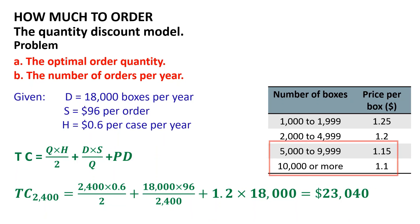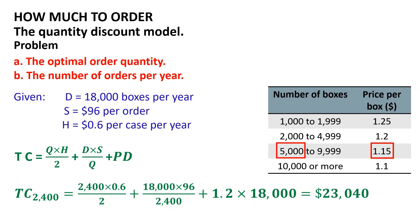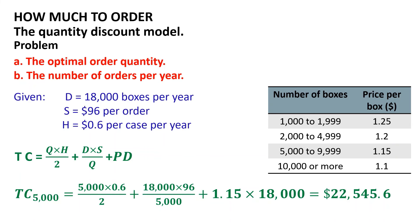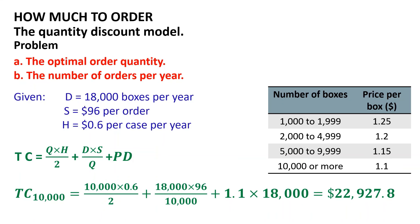Because lower cost ranges exist, each must be checked against the minimum cost generated by 2,400 cases at $1.20 each. In order to buy at $1.15 per box, at least 5,000 boxes must be purchased. TC at Q = 5,000 equals 5,000 multiplied by 0.6 divided by 2, plus 18,000 multiplied by 96 divided by 5,000, plus 1.15 multiplied by 18,000, which equals $22,545.60. To obtain a price of $1.10 per box, at least 10,000 boxes per order are required, and TC at Q = 10,000 equals 10,000 multiplied by 0.6 divided by 2, plus 18,000 multiplied by 96 divided by 10,000, plus 1.1 multiplied by 18,000, which equals $22,927.80.